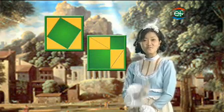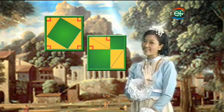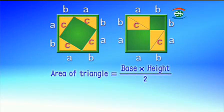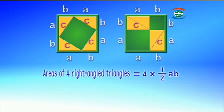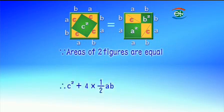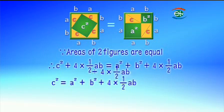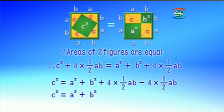Check out the yellow portion of the two figures. Each figure has four same-sized right angled triangles. The area of each triangle equals base times height divided by two, which equals ab/2. The total area of the four triangles in each figure equals 4 × (ab/2). As the areas of the two figures are equal: c² + 4×(ab/2) = a² + b² + 4×(ab/2). After transposition of terms, c² = a² + b², and that is Pythagoras theorem.